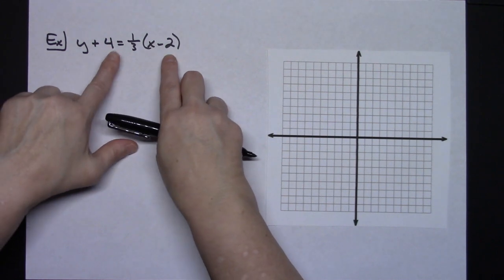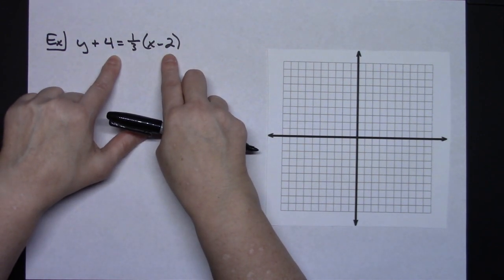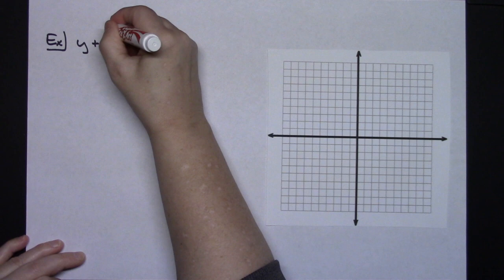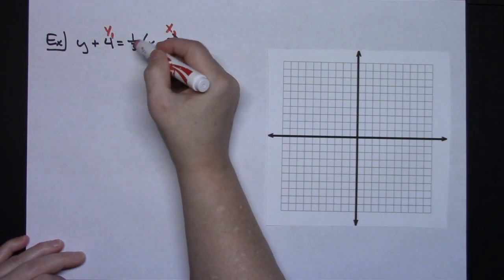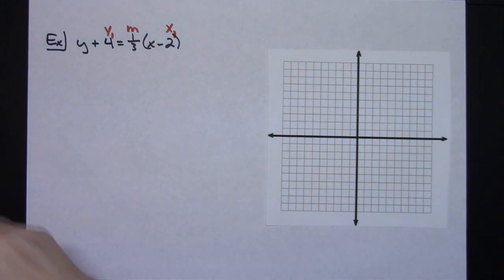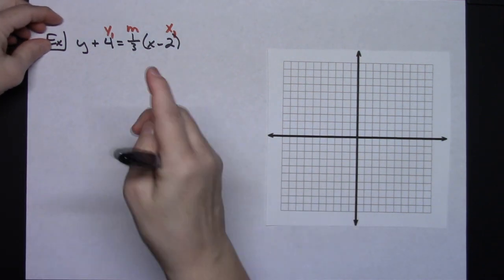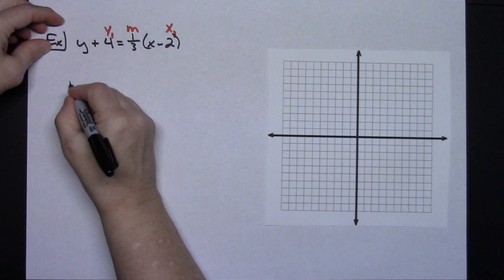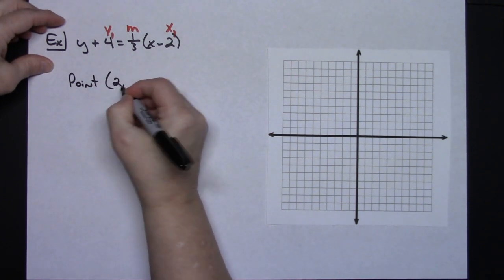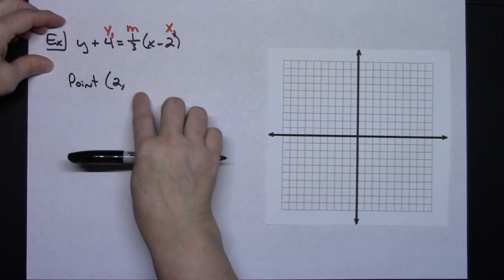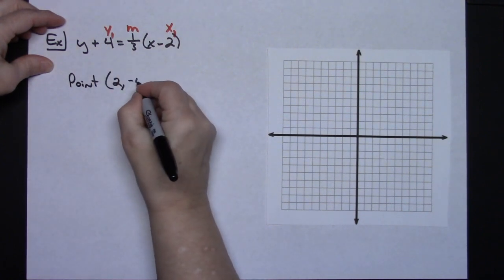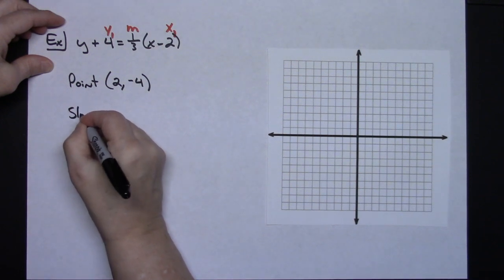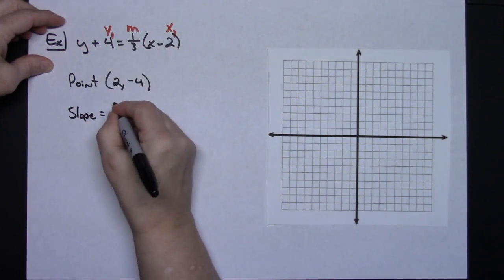Looking at this example, I can identify my x-sub-1 and y-sub-1. I see a negative 2 for x, so my x-coordinate is going to be positive 2 — the opposite. For y, I see a positive 4, so my y-coordinate is negative 4. So the point on my line is (2, -4). The fraction out front is my slope, which is one-third.